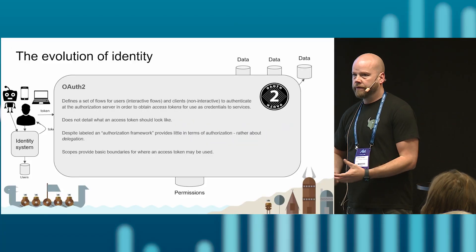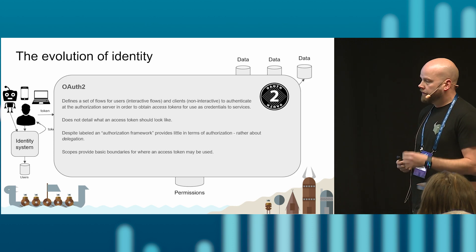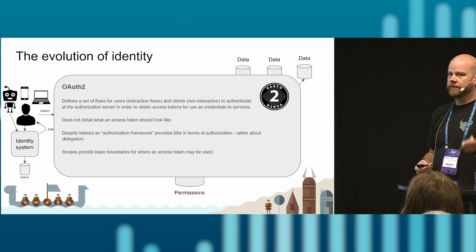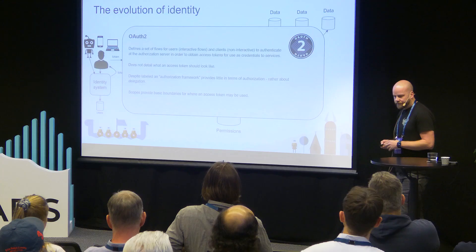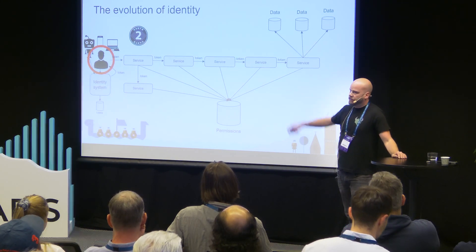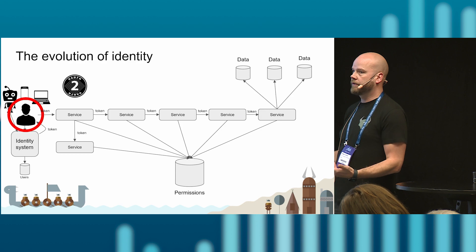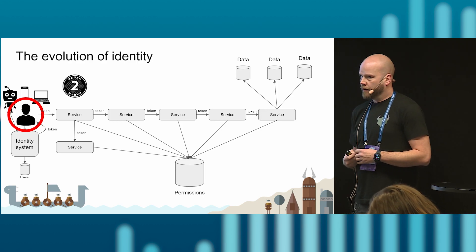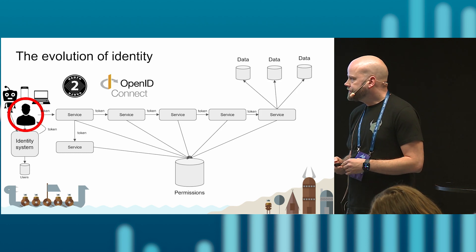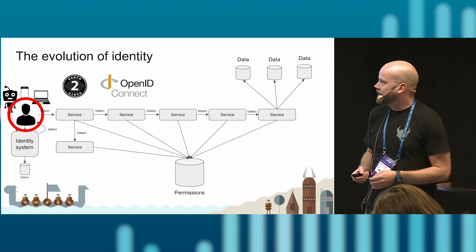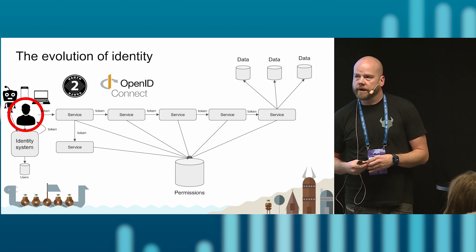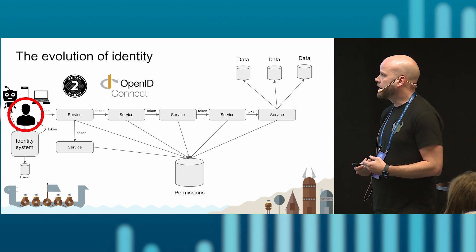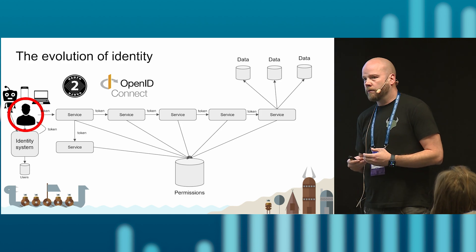There is a coarse-grained way to allow tokens to carry scopes — basically saying this token can be used for this purpose — but it should not be used for fine-grained authorization needs. OAuth also doesn't define who a person is, how to describe a user, or what attributes to expect. The OpenID Connect standard, an addition on top of OAuth, tries to standardize the attributes we can expect — things like email addresses, phone numbers, user IDs — as part of the identity package.